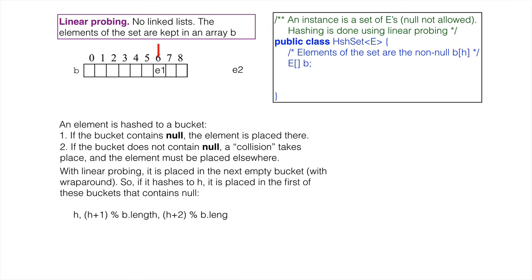In linear probing, it is placed in the next bucket to the right with wraparound that is null. We show the placement of two more values that hash to bucket 6 or 7.